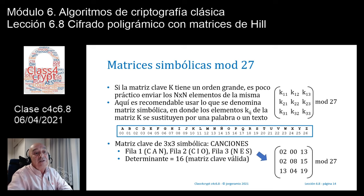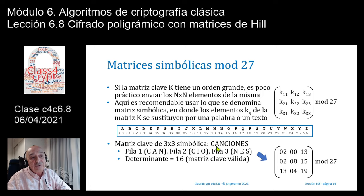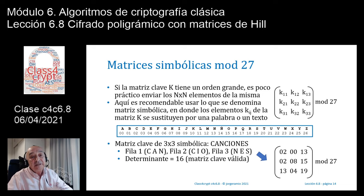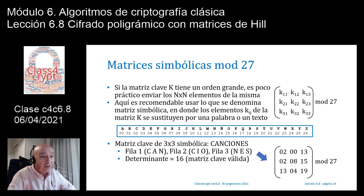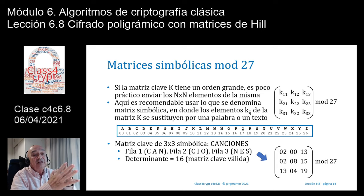Supongamos que debemos trabajar con una matriz de 3×3. En vez de enviar todos los números, te envío la palabra 'canciones'. La C=2, A=0, N=13, C=2, I=8, O=15, N=13, E=4, S=19. Calculamos el determinante de esa matriz y obtenemos 16 — una matriz válida dentro de módulo 27: no vale 0 y no tiene factores con 27. Por el contrario, si usáramos 'camionero', el determinante sería 12, que tiene factores con 27, por lo que no serviría como matriz clave.